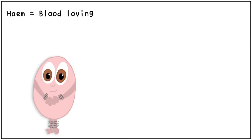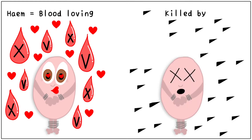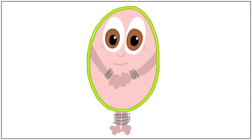Haem means blood loving. Haemophilus requires factor 5 or NAD and factor 10 or hematin for its growth. However, it is a very delicate organism and is easily killed by contact with heat, cold, disinfectant and drying. Let us look at what makes Haemophilus so strong in our body, or its virulence factors.